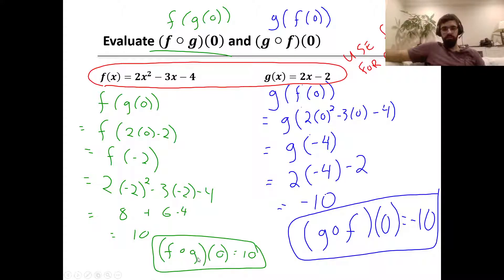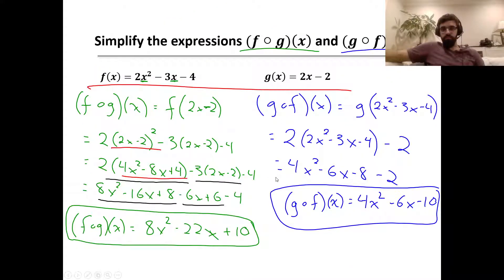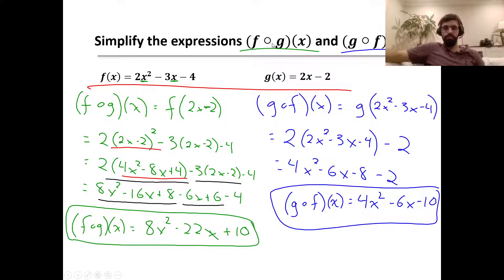Notice that f of g of 0 and g of f of 0 have different answers — positive 10 and negative 10. This next question is a little different: we're going to find f of g of x not evaluated at a specific point. Instead, we'll put an expression inside of an expression and simplify it to create a new expression representing the composition of the original expressions — combining two expressions into one.